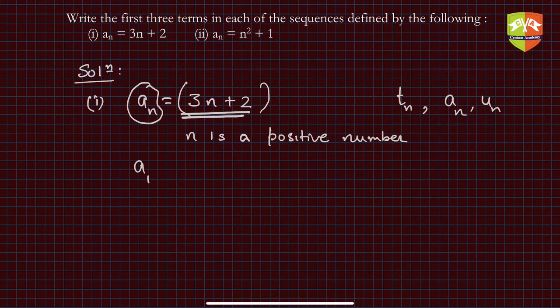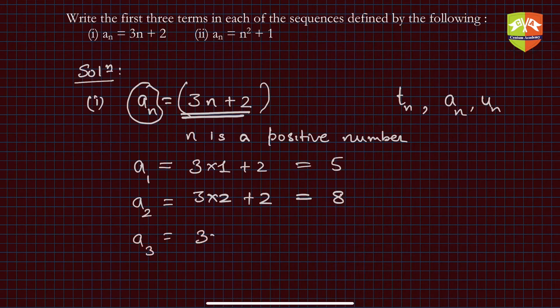Replace the subscript—wherever you see n, replace that by the number. So 3 × 1 + 2, a_1 is simply 5. a_2 will be 3 × 2 + 2 = 8, and a_3 will be 3 × 3 + 2 = 11.